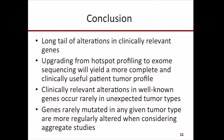In summary, we saw a long tail of alterations in clinically relevant genes. Going from hotspot profiling to exome sequencing yields a more complete and clinically useful patient tumor profile. Clinically relevant alterations in well-known genes occur rarely in unexpected tumor types, and genes rarely mutated in any given tumor type are more regularly altered in aggregate studies. To improve these analyses, we are integrating additional data types such as copy number variations and targetable fusions like ROS1 fusions in lung cancer.